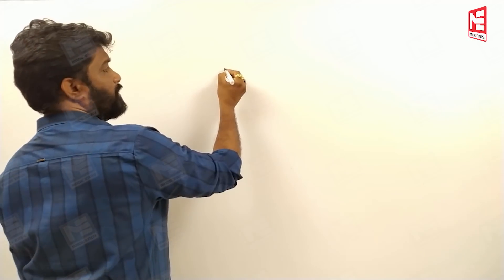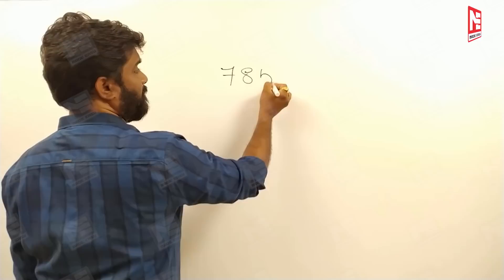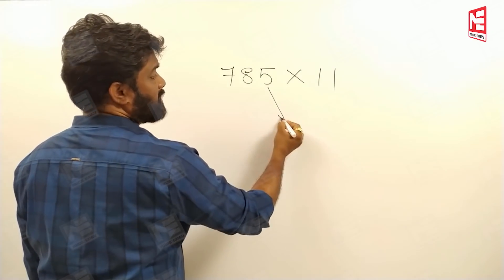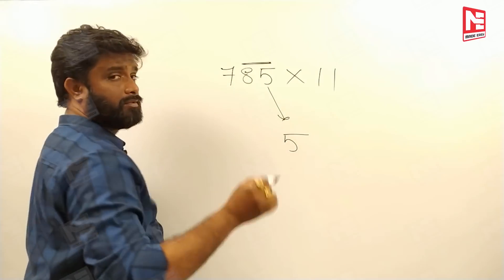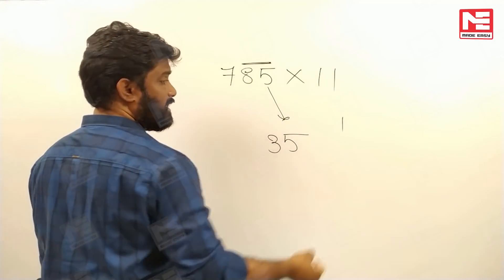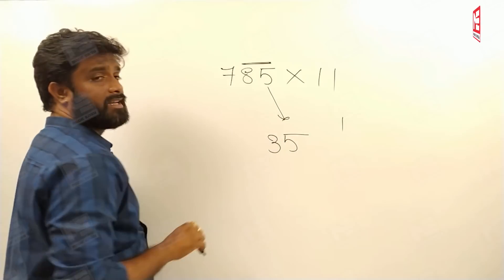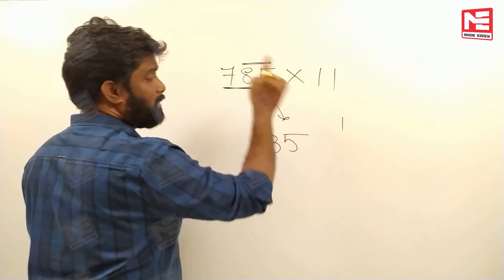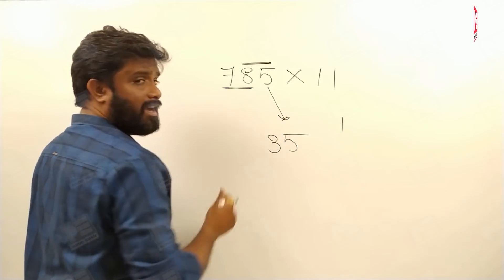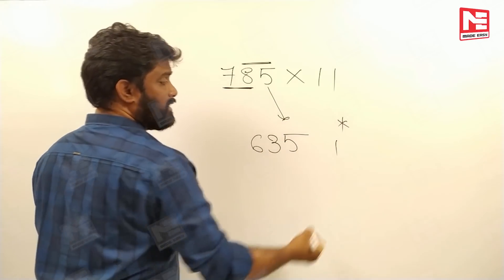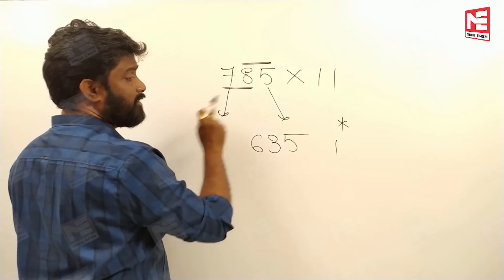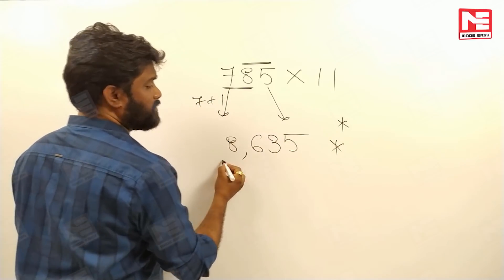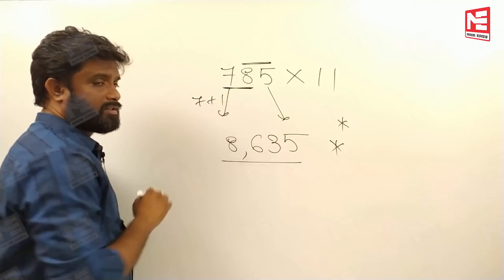Suppose we multiply 785 into 11. Write 5 as it is. Then 8 plus 5 gives 13 — write 3, carry 1. Then 7 plus 8 gives 15, plus the carry 1 gives 16 — write 6, carry 1. Finally, 7 plus carry 1 gives 8. So your answer is 8635.